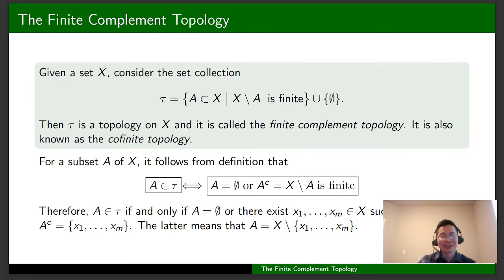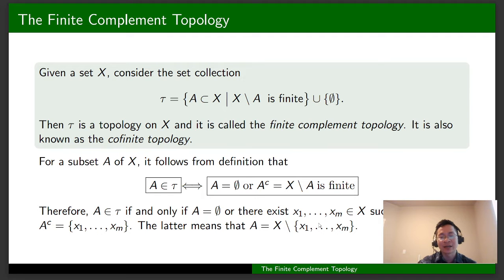We consider an arbitrary set X and define a collection of subsets of X as follows. Tau is the collection of all subsets A such that the complement of A is finite, or A is the empty set. It follows that A belongs to tau if and only if A is the empty set, or there exist x1, ..., xm in X such that the complement of A is this finite set, meaning A is X minus this finite set.